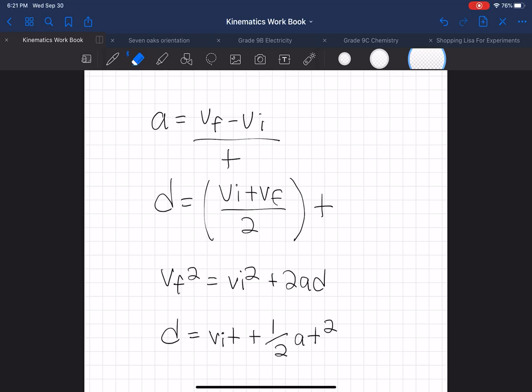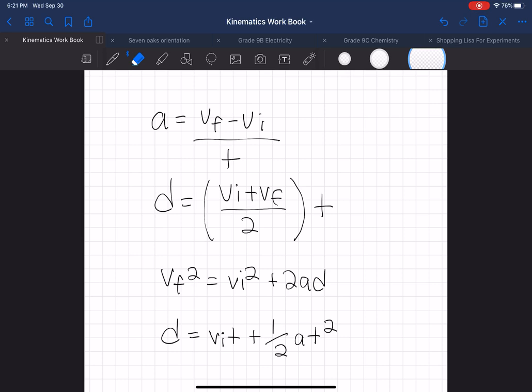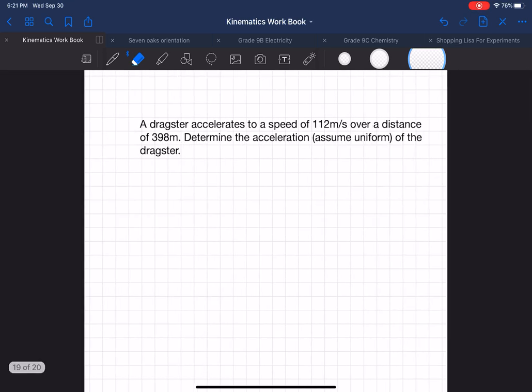These formulas can be rearranged to solve for a component that you may not have, so I'm going to show you a way of rearranging and also using these formulas. Let's go into a practice question now which is this one here. A dragster accelerates to a speed of 112 meters per second over a distance of 398 meters. Determine the acceleration, assume that it is uniform, of the dragster.